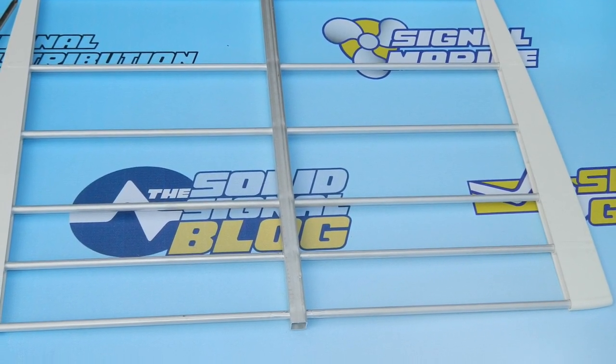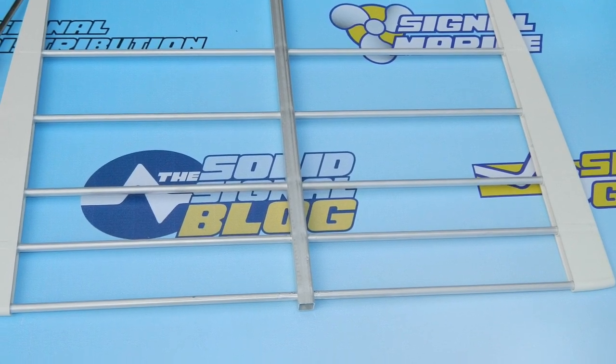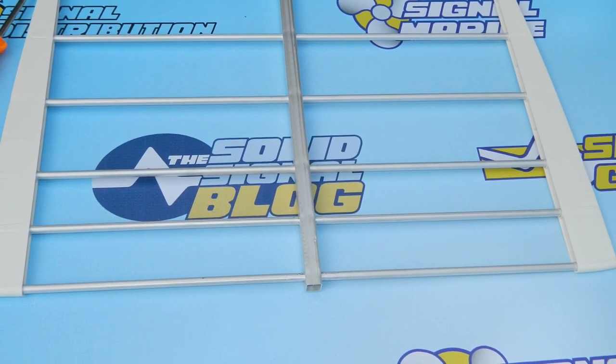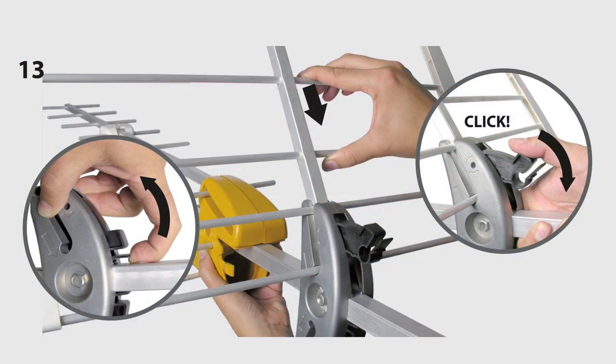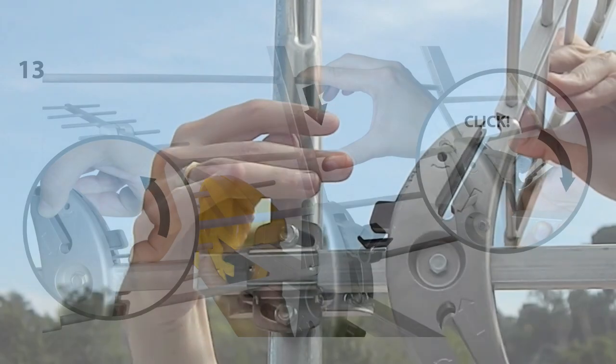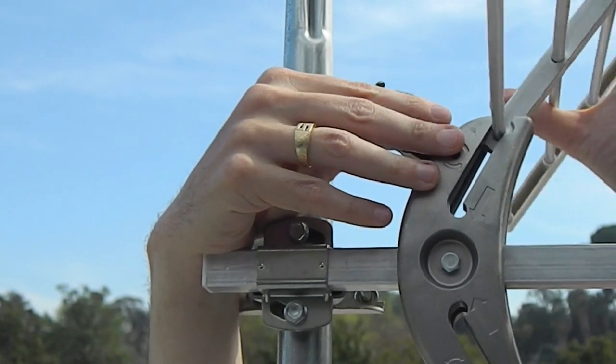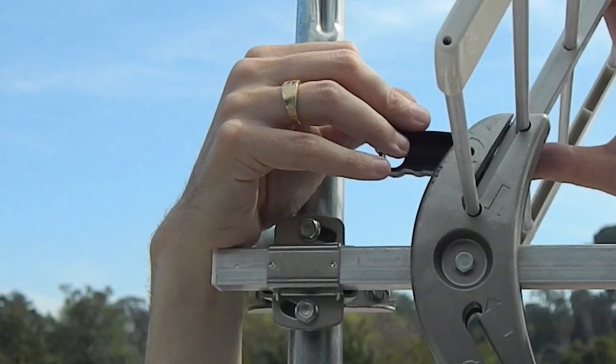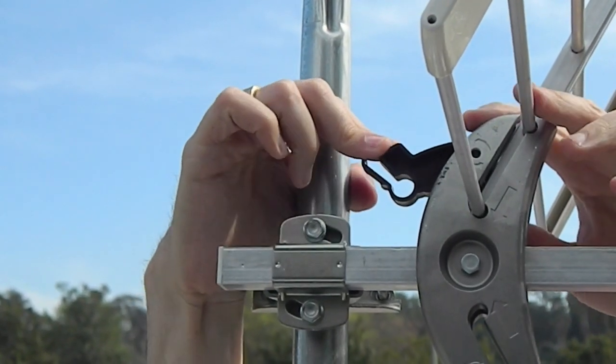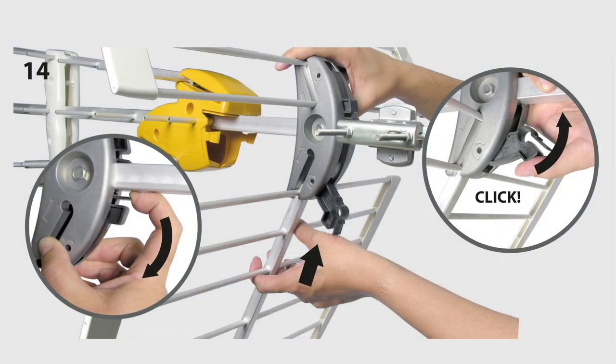In this next step, you're going to be putting on the reflectors. Notice that two of them are closer than a whole bunch of others. Those are the ones that are actually closest to the mast. Slide them in, and they fit inside notches. When you've got them inside the notches, and you're going to have to kind of pull up the plastic part in order to get everything in there, then just push the plastic down until it clicks into place.